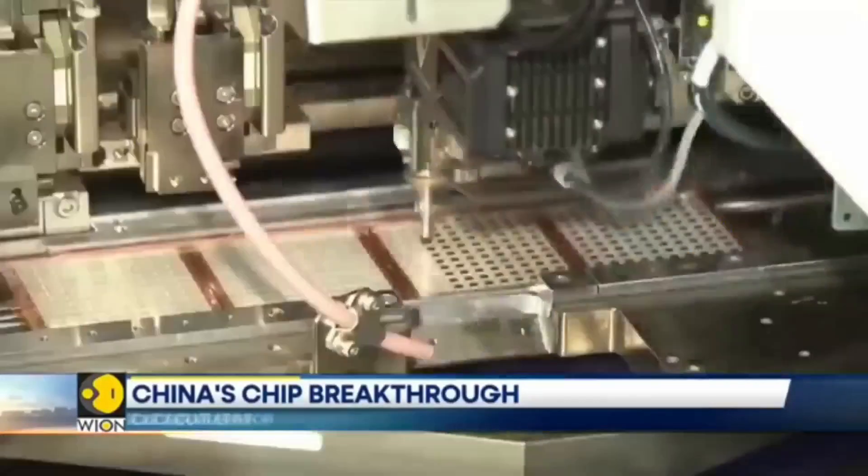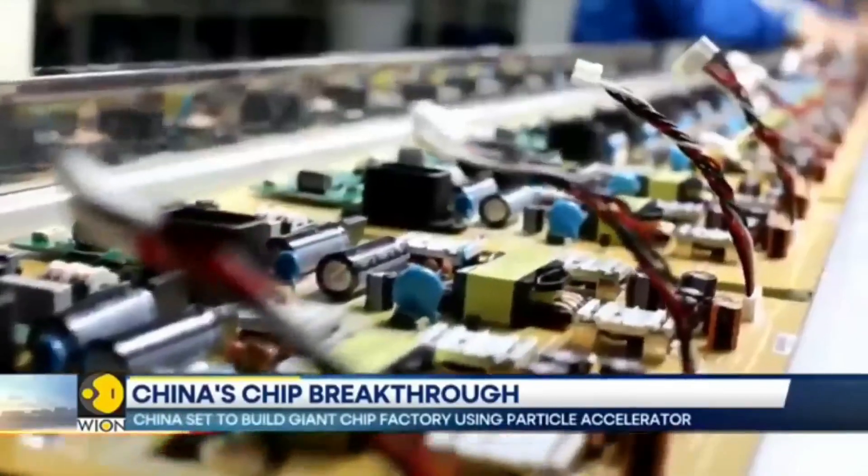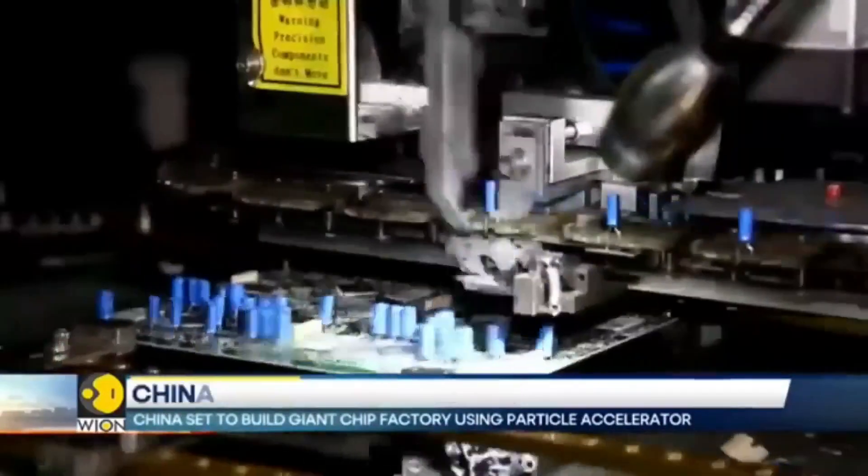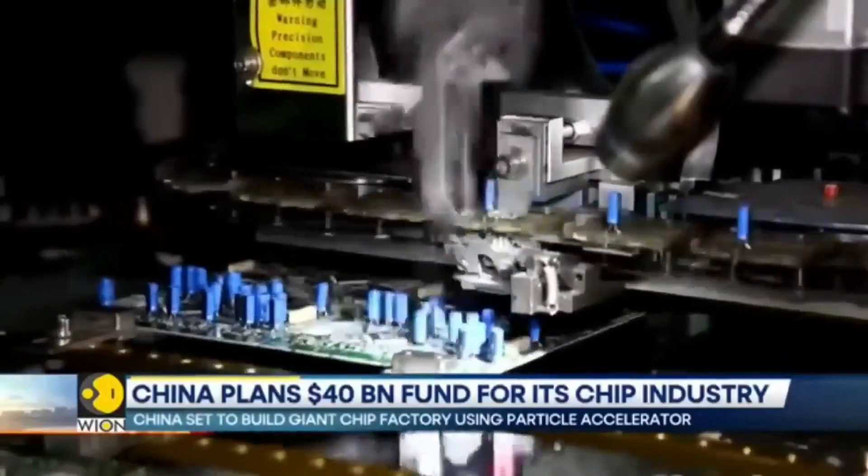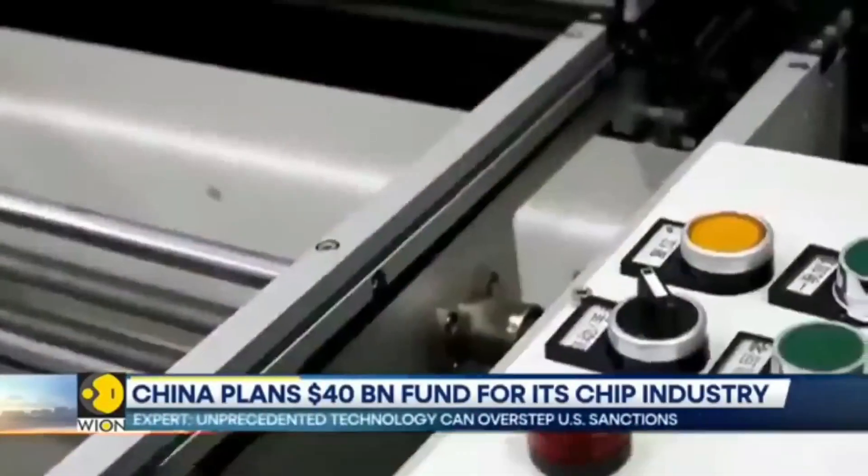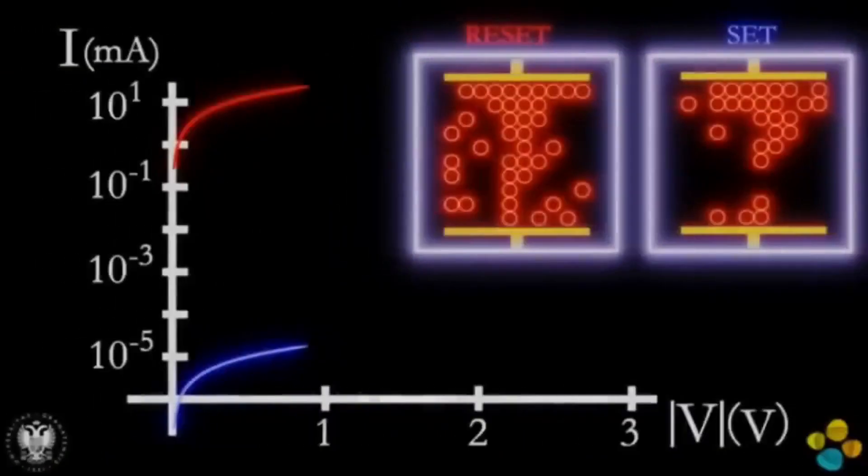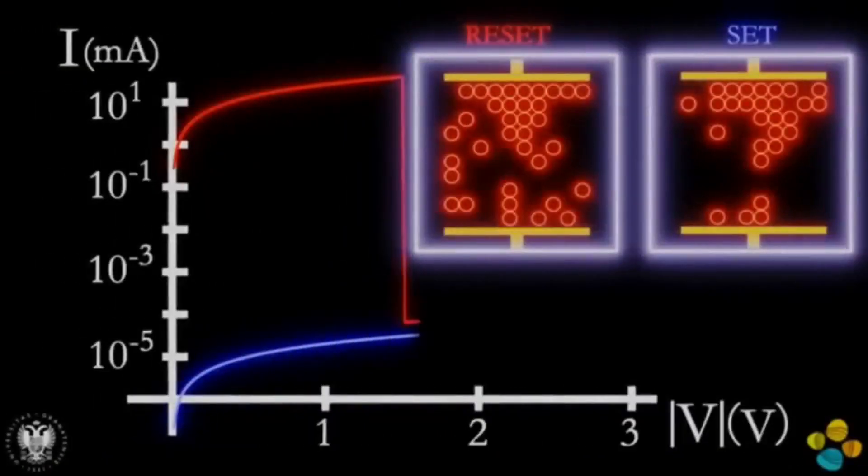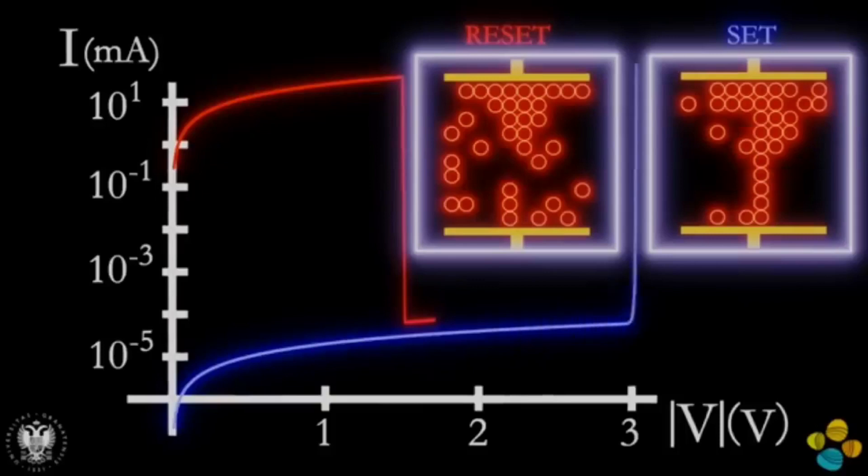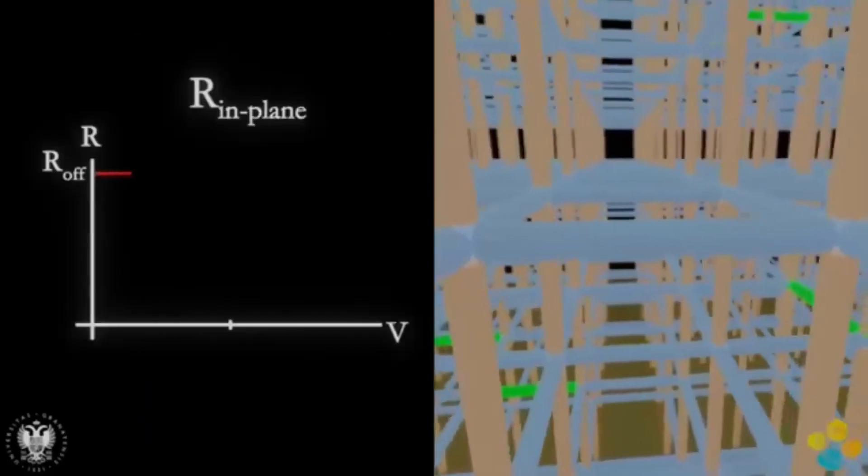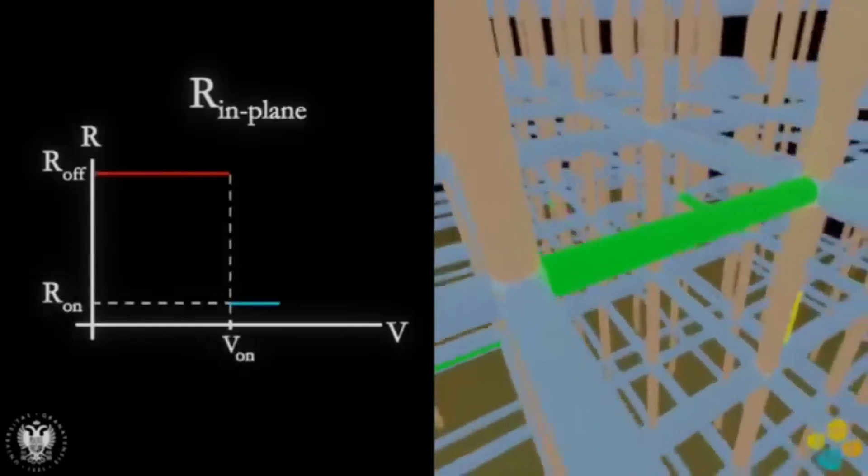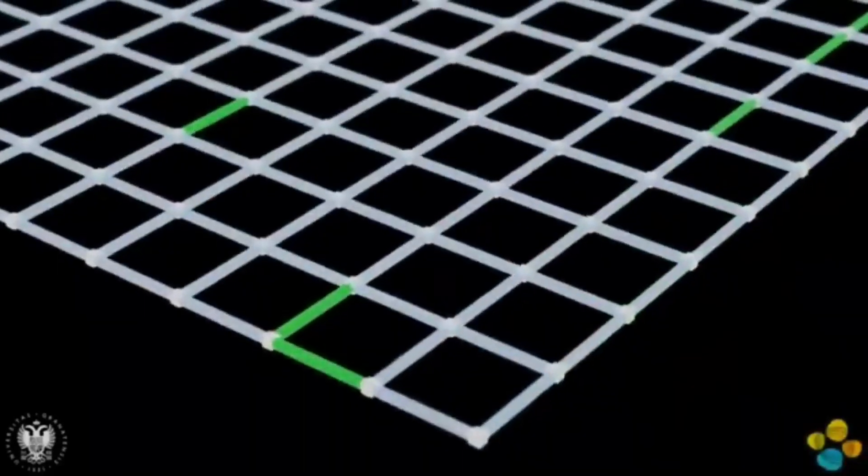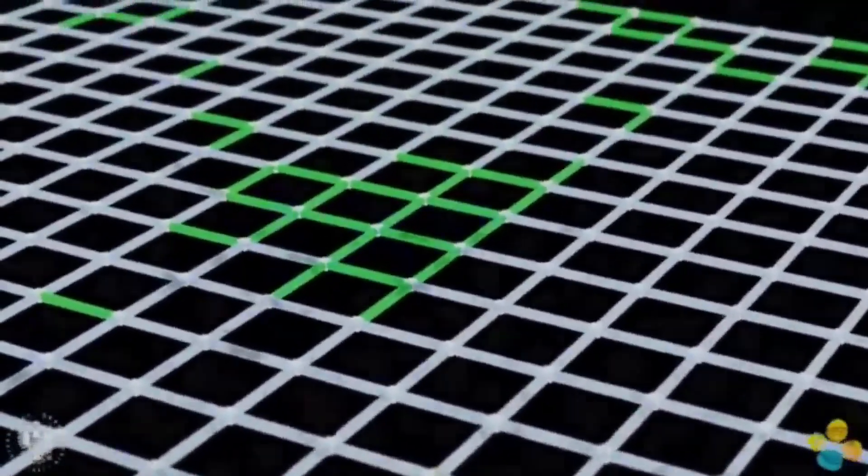A memristor, short for memory resistor, possesses the remarkable ability to remember the quantity of charge that has flowed through it and alter its resistance accordingly. This unique characteristic allows memristors to learn from their previous experiences, making them ideal for emulating the synaptic connections in the human brain. However, despite Chua's theory, memristors remained elusive for decades, until recent breakthroughs brought us to the brink of a new era in computing.